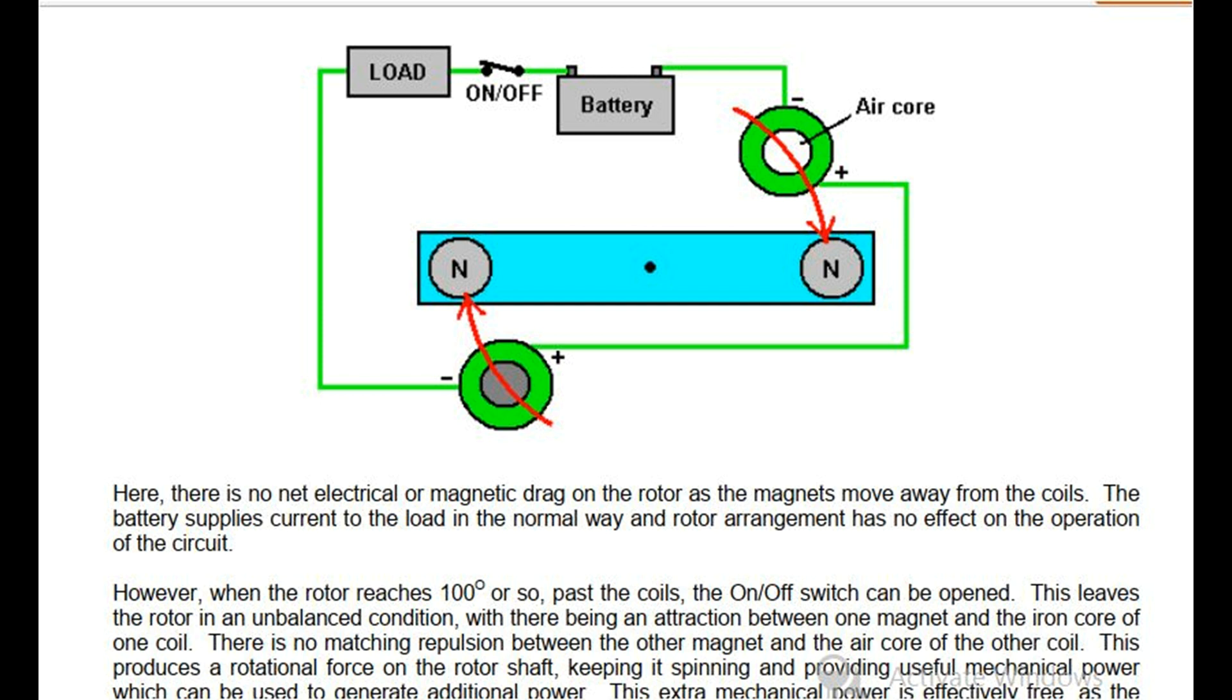There is no matching repulsion between the other magnet and the air core of the other coil. This produces a rotational force on the rotor shaft, keeping it spinning and providing useful mechanical power.